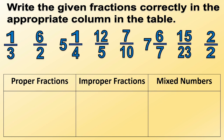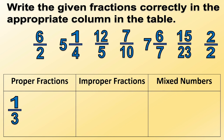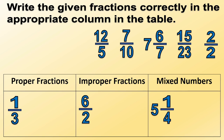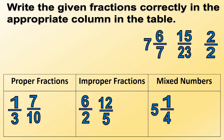Let's answer this — write the given fractions correctly in the appropriate column in the table. One-third is a proper fraction. Six-halves is an improper fraction. Five and one-fourth is a mixed number. Twelve-fifths is an improper fraction. Seven-tenths is a proper fraction.